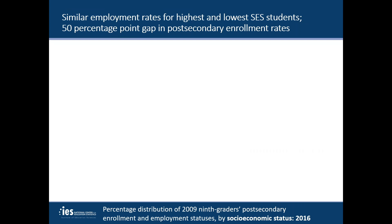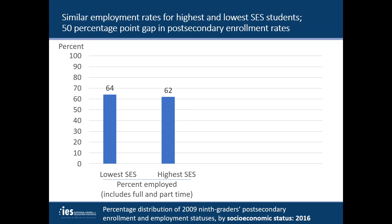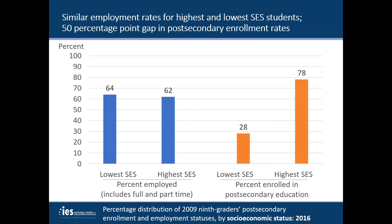The most recent data from HSLS-09 are from a 2016 follow-up survey, about three years after most of the 2009 ninth graders completed high school. One of the most striking findings is that the highest and lowest fifth of students by SES had very similar employment rates, but the highest SES students were 50 percentage points more likely to be enrolled in post-secondary education in 2016. The report goes into further detail showing significant differences between the lowest and highest SES students in terms of the types of institutions they attend and the degrees they pursue.